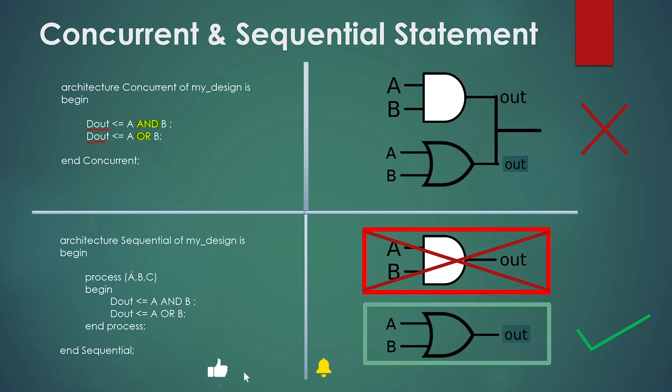Now let's talk about the sequential statements. Here we have the same set of statements, but these are now executing sequentially. Means first statement executes first, which says output d_out gets the value of logical AND of inputs. So we made an AND gate.